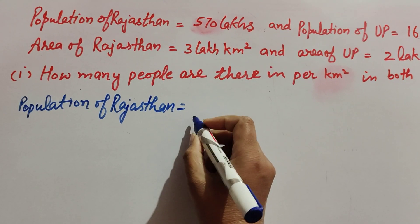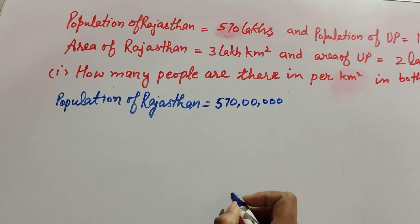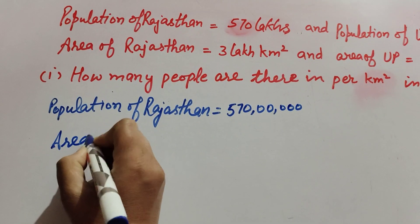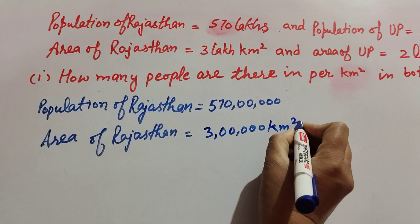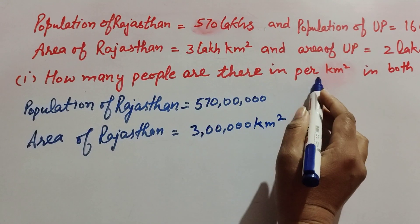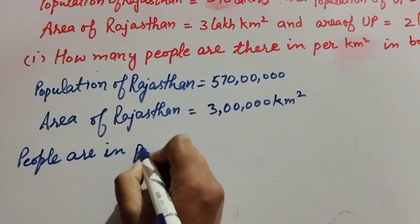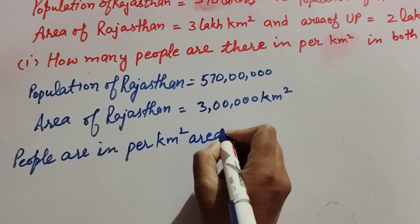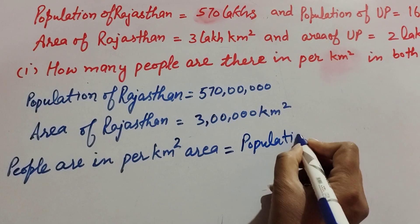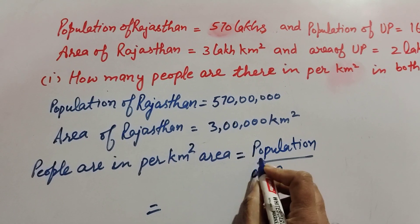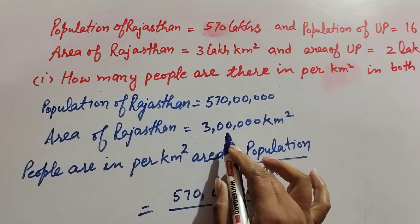Given: population of Rajasthan is equal to 570 lakh, and area of Rajasthan is 3 lakh per kilometer square. We find how many people are there in per kilometer square area. It is equal to population of Rajasthan over area of Rajasthan: 570 lakh over 3 lakh.